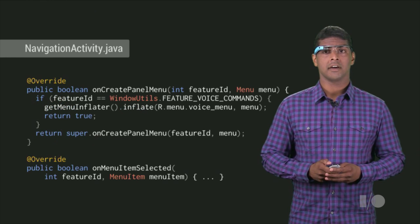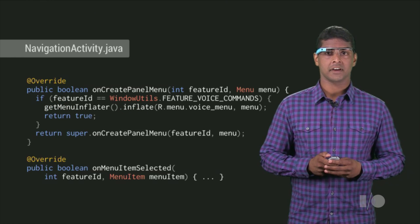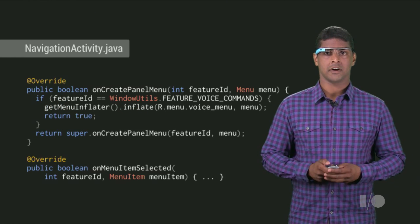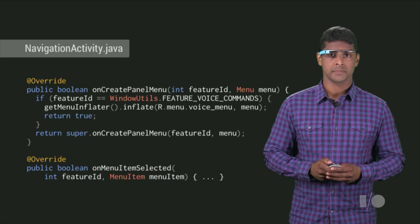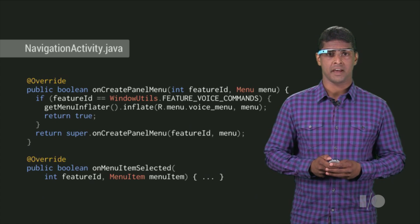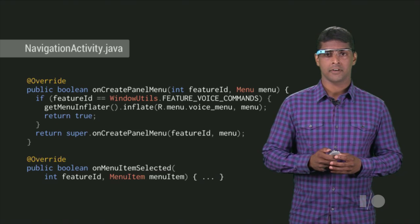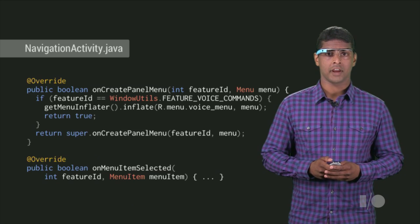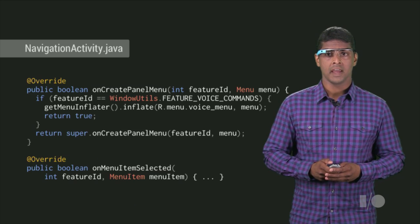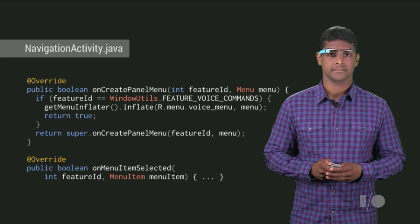When voice commands are triggered, the platform then calls menu-specific methods on your activity. Just like standard Android menus, voice menus can also be inflated from XML. Here, the navigation trigger activity inflates the voice menu XML in onCreatePanelMenu, and then handles voice commands in onMenuItemSelected.